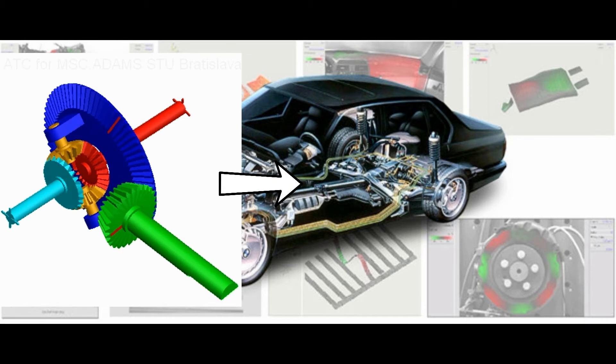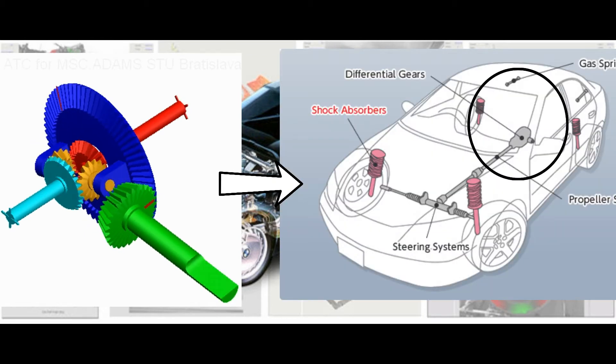Differential is the main component of the powertrain. It is bolted on the rear axle and connects the propeller shaft to the rear wheels.